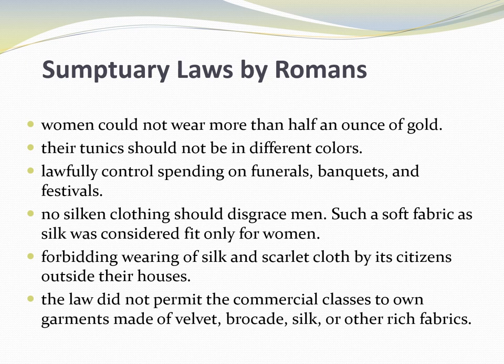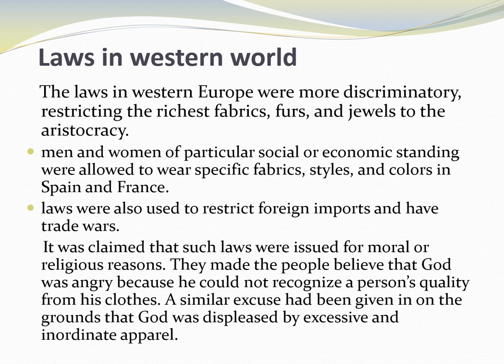Citizens in Florence were not allowed to wear silk and scarlet cloth outside their houses. In 1366, Perugia banned the wearing of velvet, silk, and satin within its boundaries. The law did not permit the commercial classes to own garments made of silver, silk brocade, velvet, and other rich fabrics.